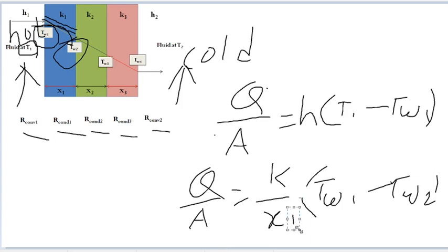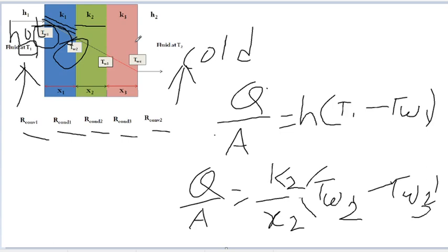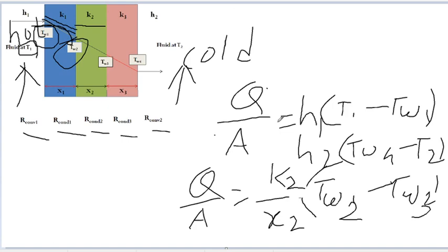For the second material we write Q/A = (k2/x2)(T_w2 − T_w3). For the right-side convection we write Q/A = h2(T_w4 − T2), where T2 is the temperature of the right-side fluid. So we have all the equations: heat transfer by convection on the left, heat transfer by conduction through slabs 1, 2, and 3, and heat transfer by convection on the right.